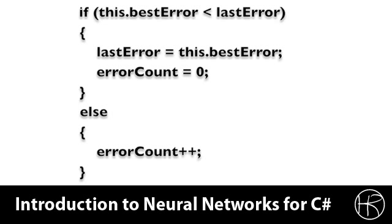If the best error is less than the last error, then we are going to set the last error equal to the best error, and we're going to reset the error count because we have improved the error rate of the neural network. Otherwise, we are going to execute the else clause of the if statement, which is going to cause the error count to increase by 1.